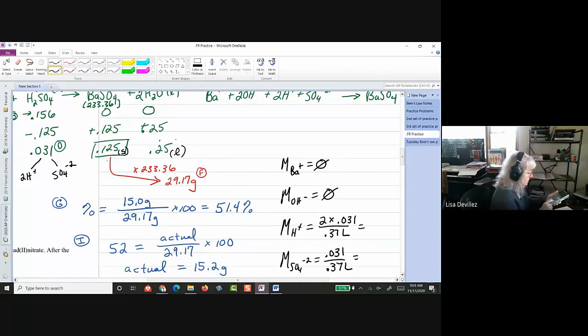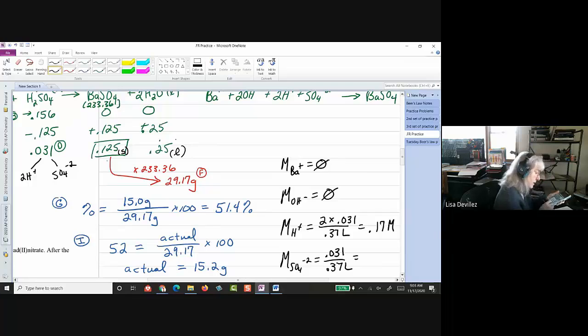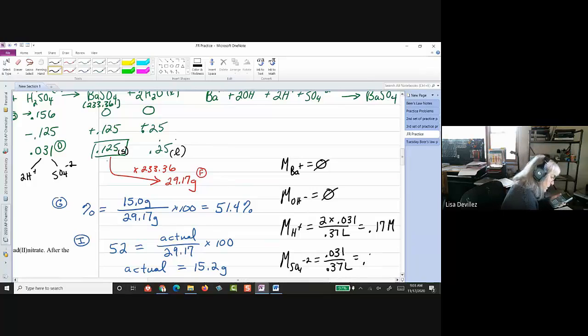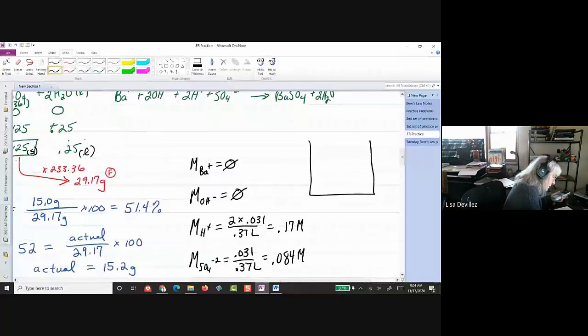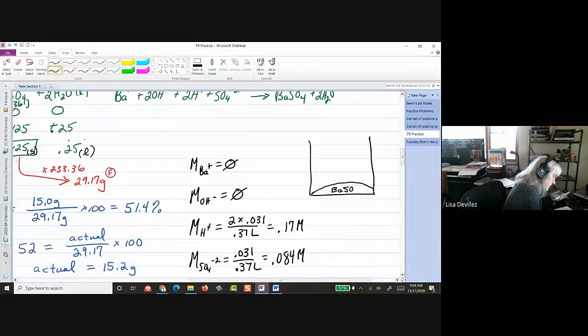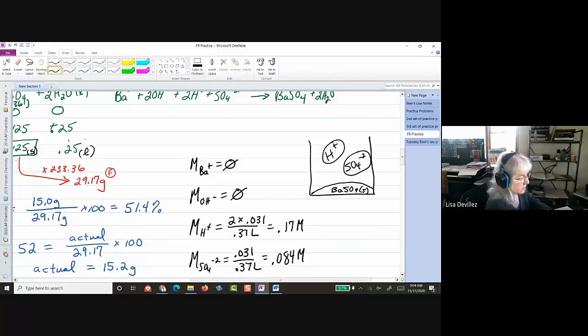And then I get 2 times 0.031, so my moles of my hydrogen, and 0.031 is moles of my sulfate. So, 2 times 0.031 divided by 0.37, so I get 0.17 molarity of the hydrogen, and divided by 0.37, I'm getting 0.084 molarity of the sulfate.